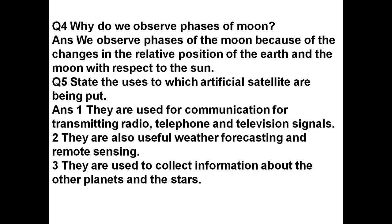Question number 5: State the uses to which artificial satellites are being put. Answer: They are used for communication, for transmitting radio, telephone and television signals. Second point: they are also useful for weather forecasting and remote sensing. Third point: they are used to collect information about other planets and stars.